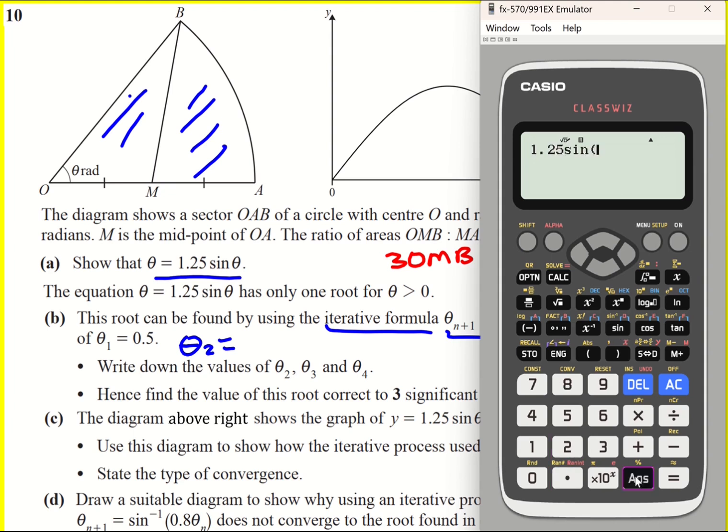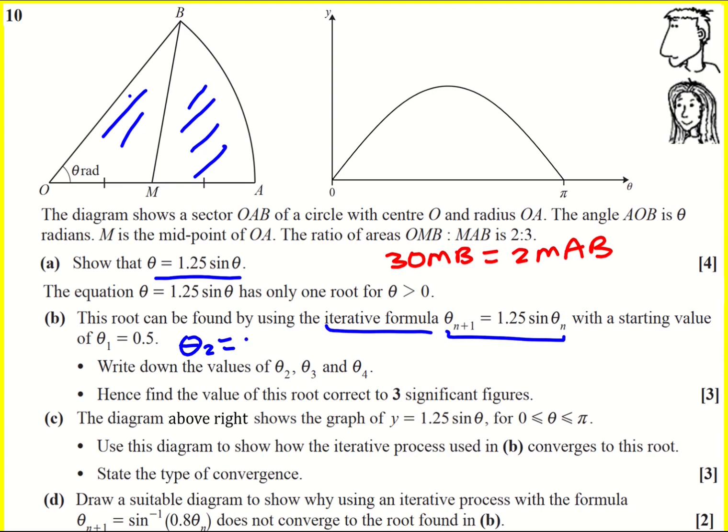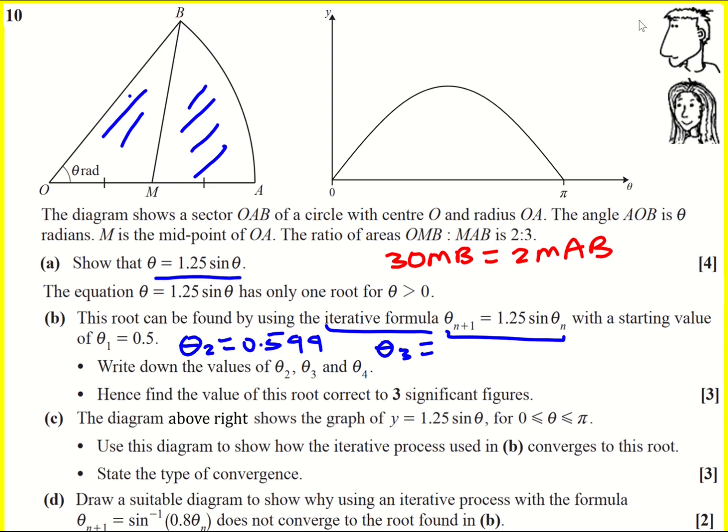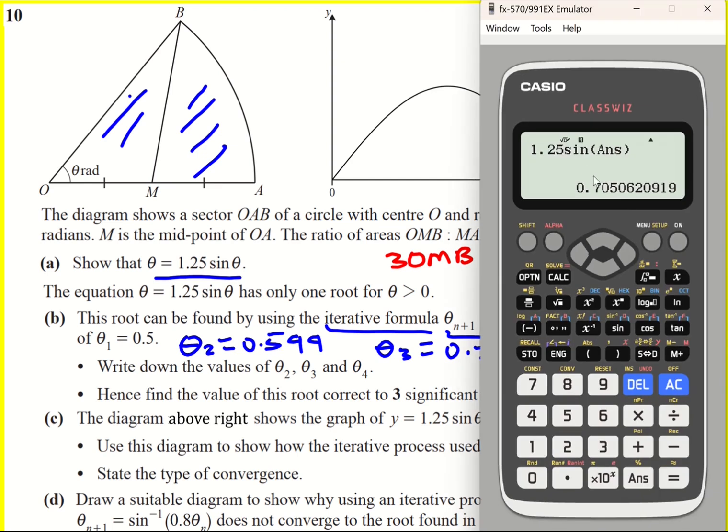1.25 times sine of the answer. At the moment it's 0.5, that's going to give me my first value 0.599. I can just press equals again. Now it will put 0.599 in as the answer. 0.705. It doesn't say whether to round it to three significant figures or anything, so I'm just writing down the first four digits. And then 0.810.